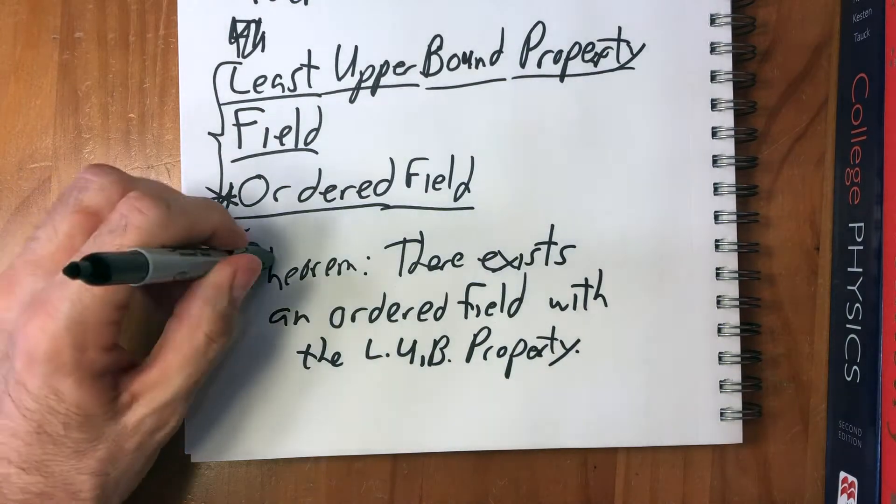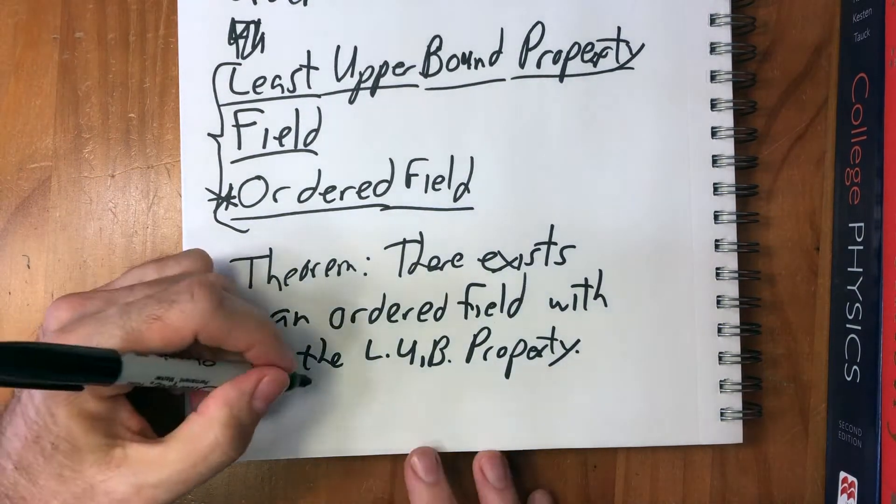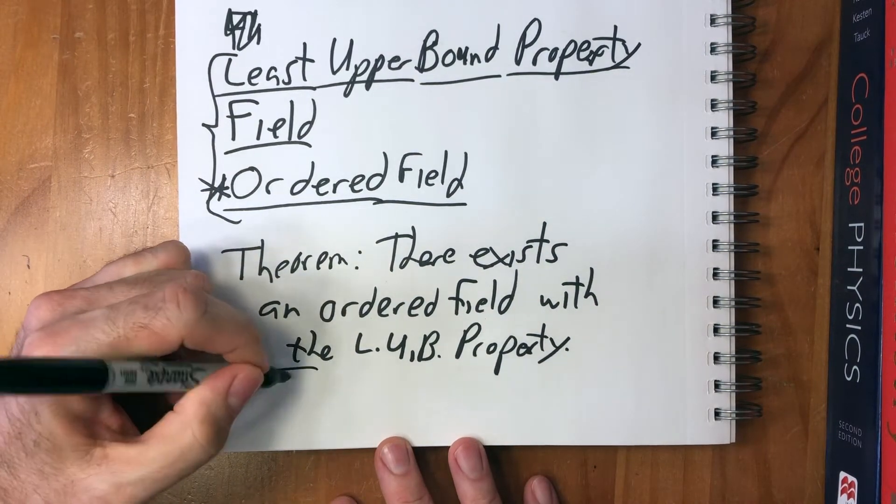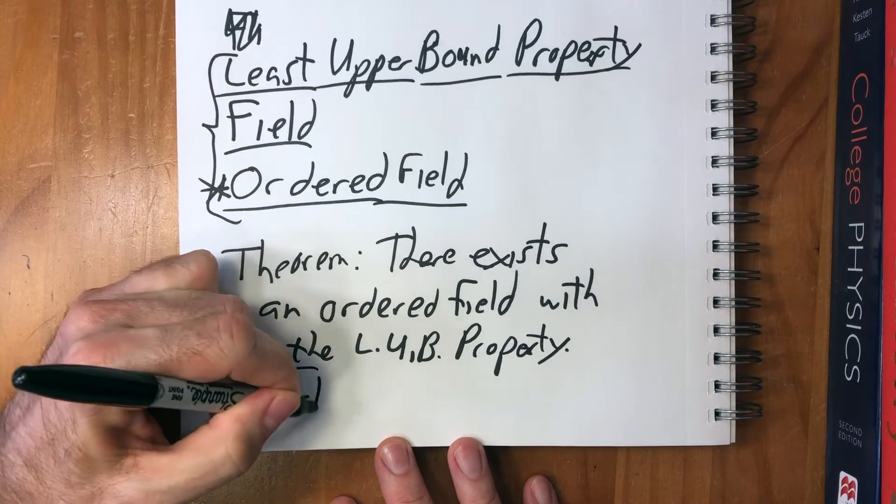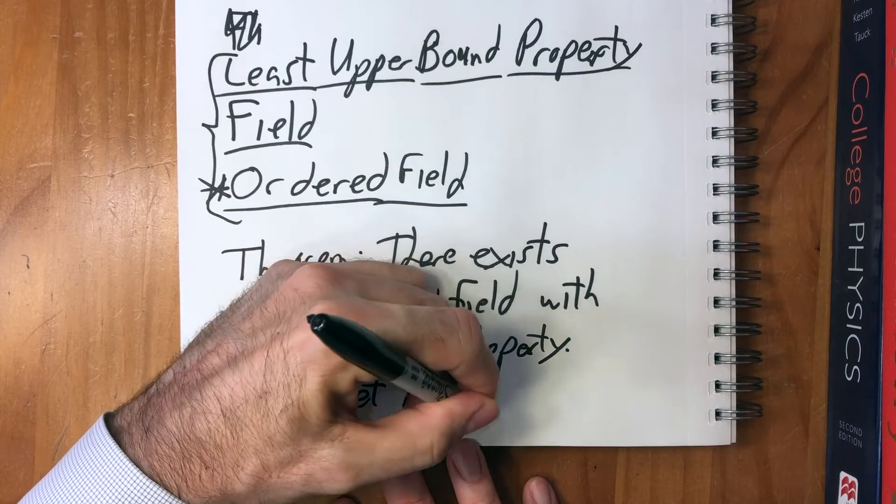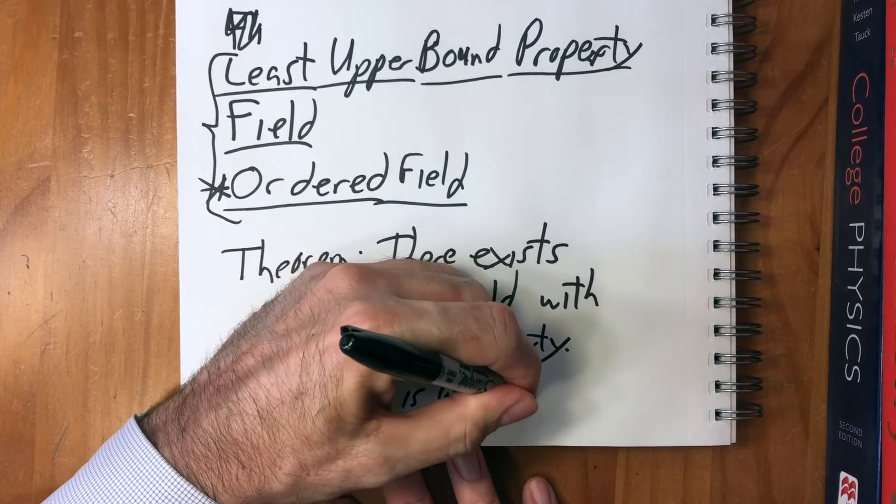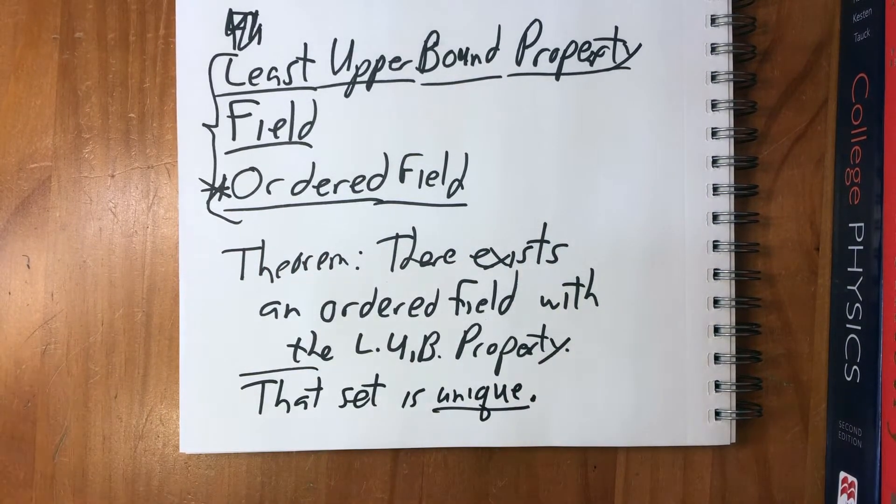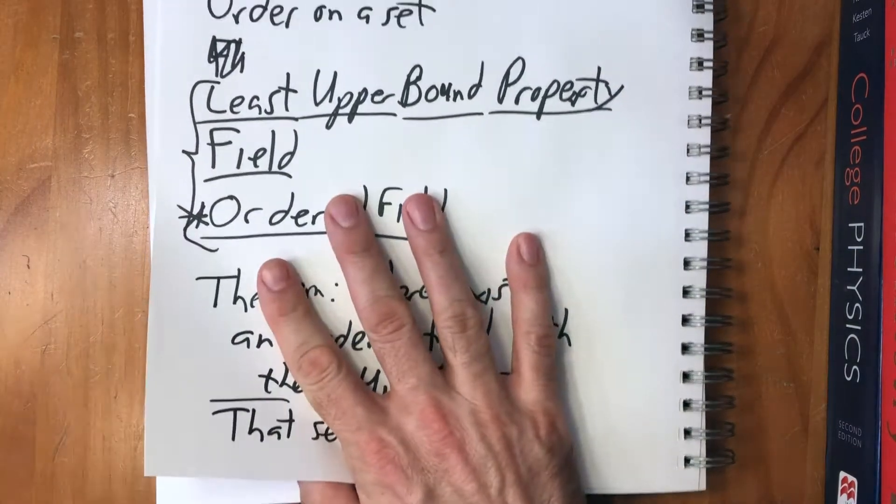And then finally, after we construct it, we're going to show that in fact, that set is unique. And I'll talk more about what that means later. But basically, there's only one set of real numbers. Okay, so ordered fields.